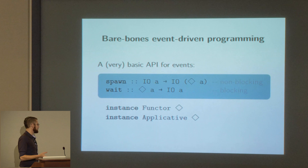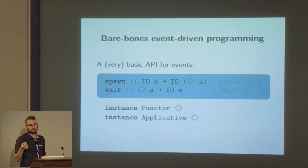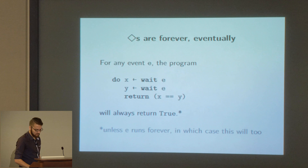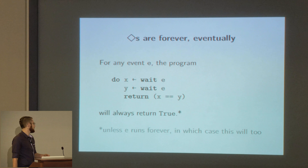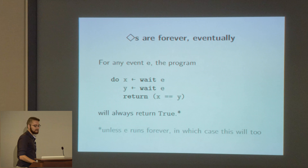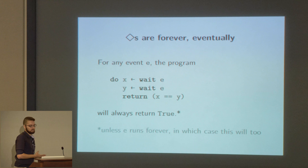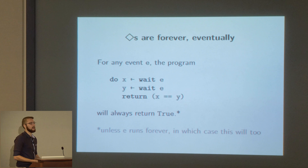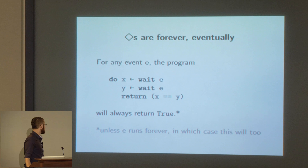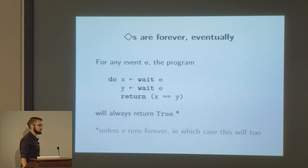Diamond has useful functor and applicative instances. If I have an event returning something of type A and a function from A to B, I can produce an event returning type B. Also, for any event, if we wait for it and then wait for the exact same event handle again, we get the same value — events don't rerun. They just return a cached, stored value. There's a caveat: if the event runs forever, we're never going to return.